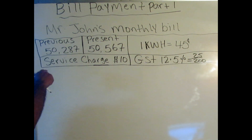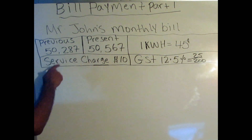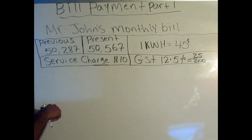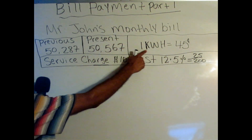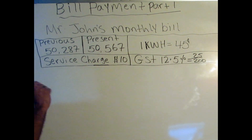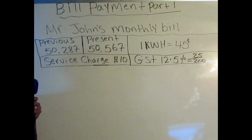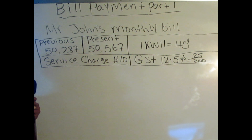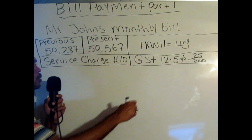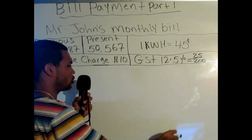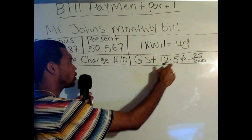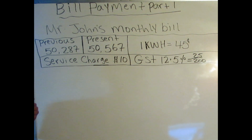As you can see, it says bill payment part one — Mr. John's monthly bill. The previous reading is 50,287 kilowatts. The present is 50,567 kilowatts. One kilowatt hour is 45 cents for every kilowatt Mr. John uses. Service charge is $10. GST, which we pay to the government, is 12.5%. There is a rule we learned that whenever you want to find 12.5%, just convert that as 25 over 200, and that's how you find 12.5% of any amount.